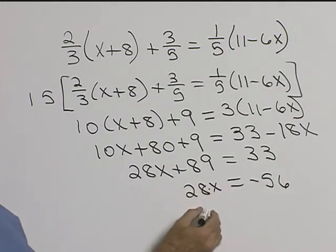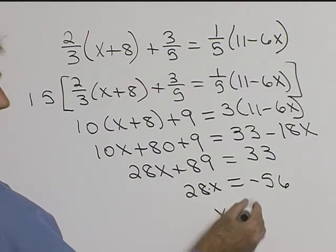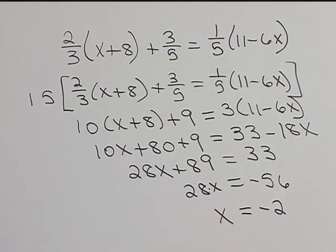Then dividing through by 28 gives us x equal to negative 2. Positive 28 and a negative 56 gives us negative 2. So solving this, we get x equals negative 2.